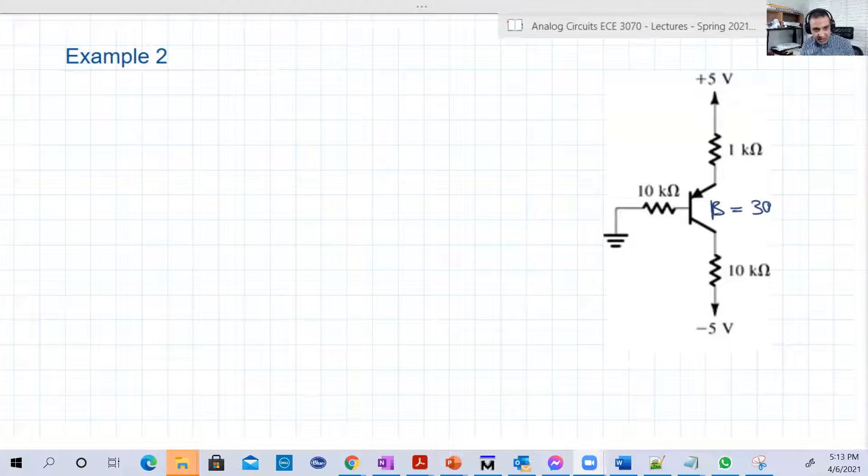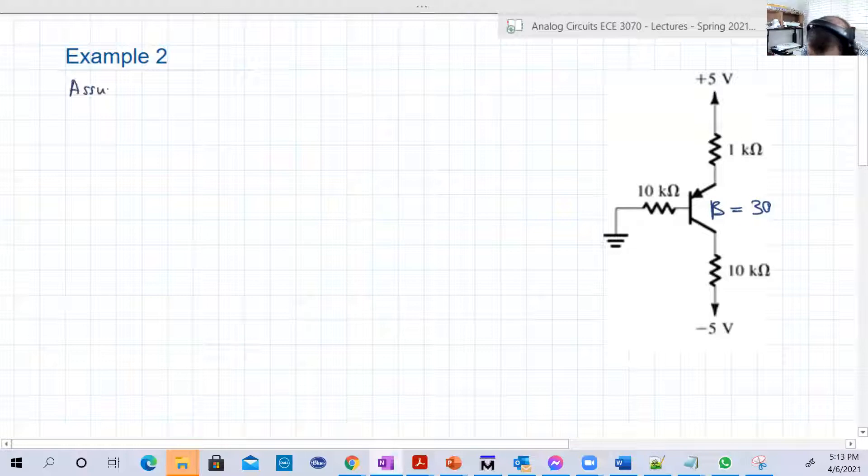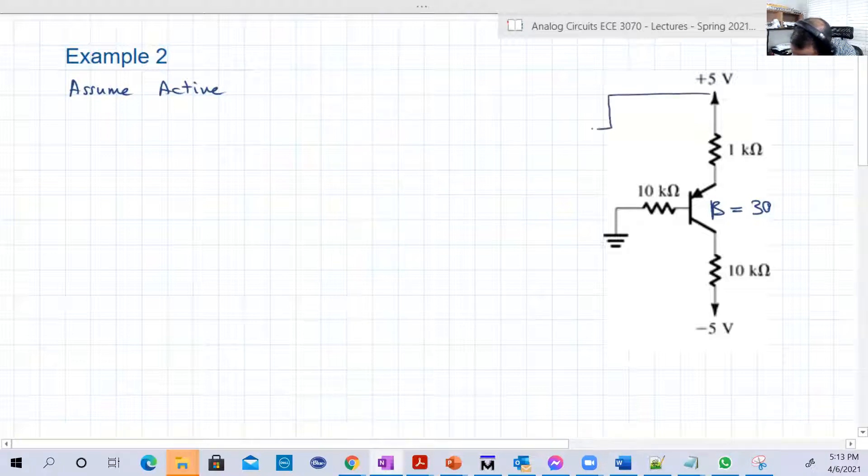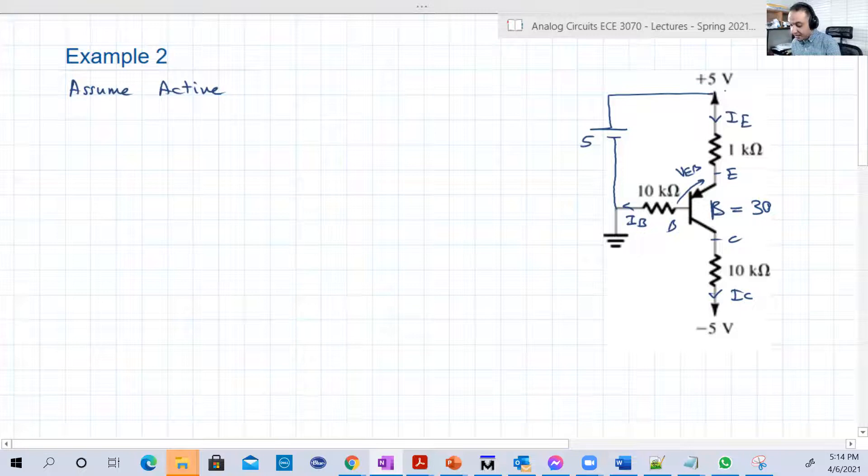So again, we start by assuming it's active. In transistor circuits, it's really hard to tell if it's saturation or active, so let's assume we assume it's a type of active. So again, so let's draw this battery like this, five volt, this is VEB. Remember, this is the emitter, this is the base, this is the collector. IC is going out of the collector, IB is going out of the base, IE is going into, look, this is the wrong, it's a mistake, so it's going into the emitter, so this is IE. It's really tricky, so be careful.